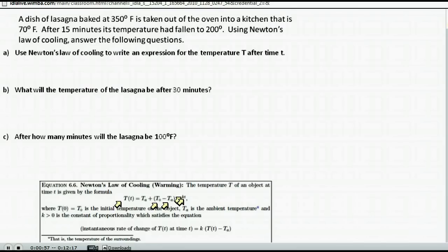So lots of variables here. You just want to be careful to write down what you have and look for what's missing. We're given an example at the top of the page. A dish of lasagna baked at 350 degrees. We're going to say that that is the initial temperature of the lasagna, 350 degrees. That's our T_0.